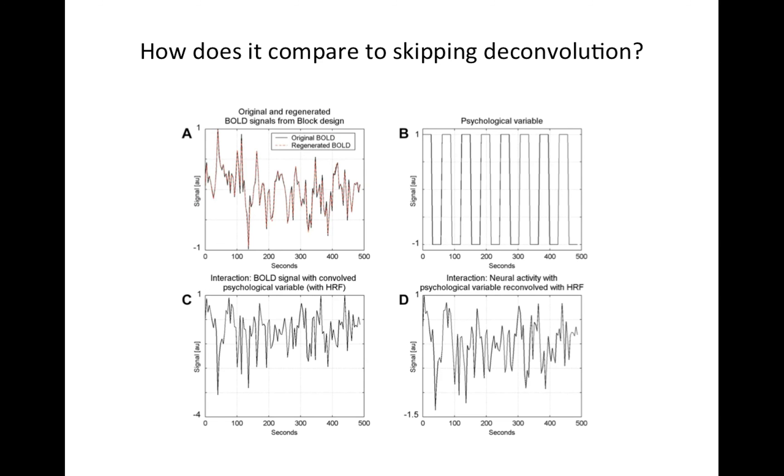Result number two. Here's the block design, the original and the regenerated. Here's how they're modeling it. There are two tasks, so they're using this modulated design. And here's the lazy person's way to create the interaction, and here's the fancier way using the ridge regression to deconvolve to get the estimate of the neuronal signal, and then reconvolve. Now in this case, if you look at this carefully, you'll see that these are actually quite similar. So the takeaway from this is if you have a block design, if your regressors look like this, then the deconvolution probably isn't going to make much of a difference.